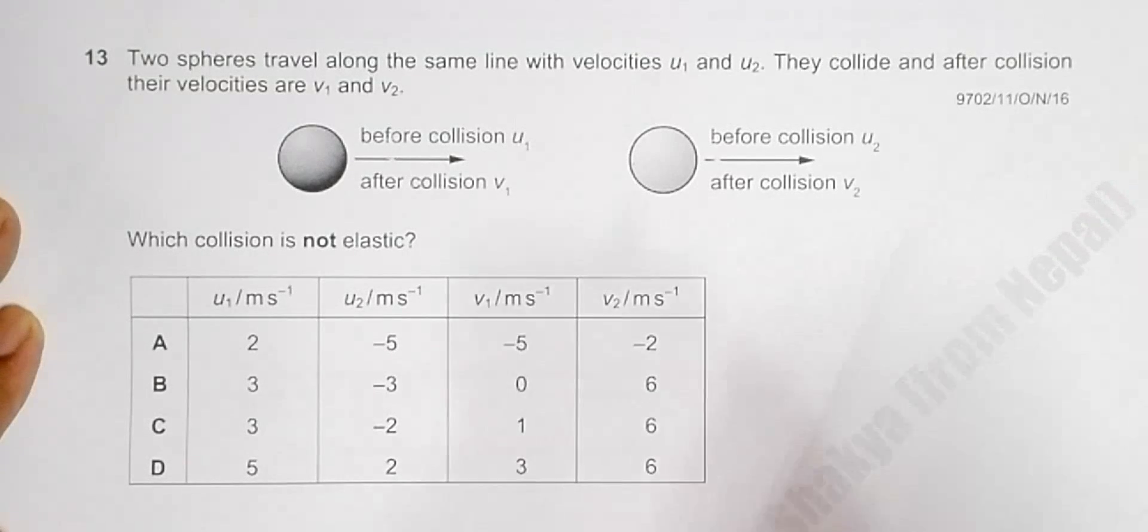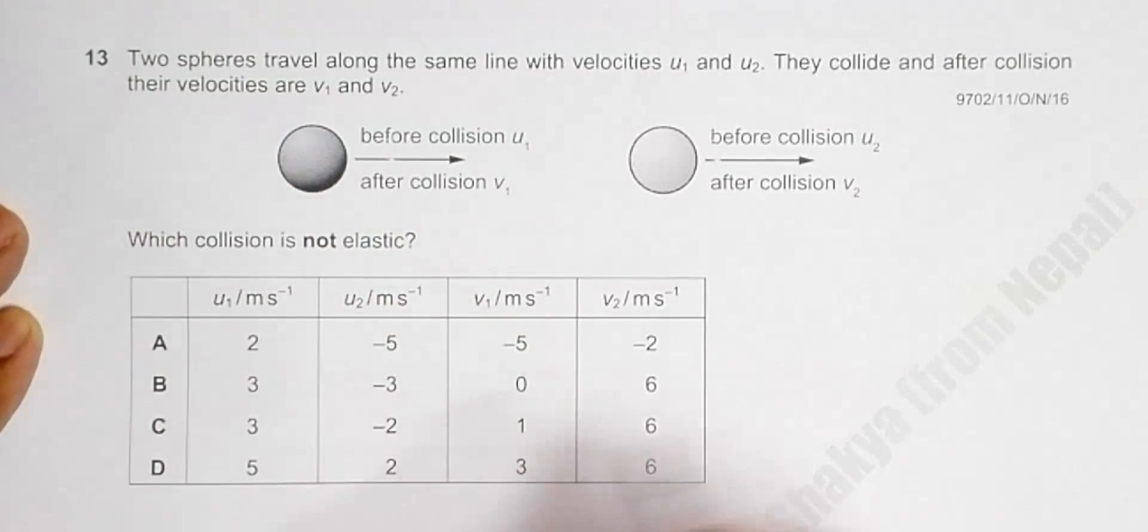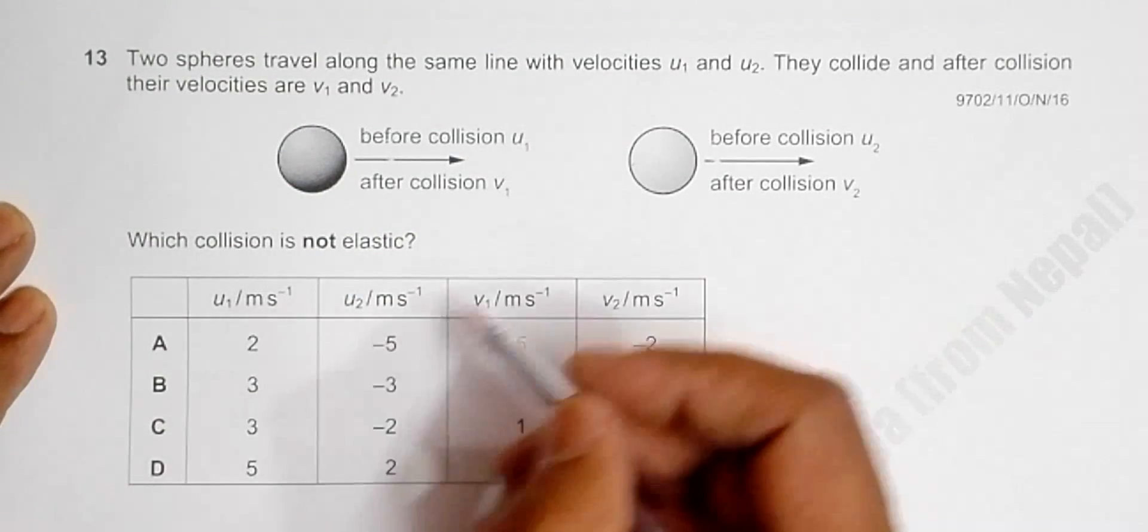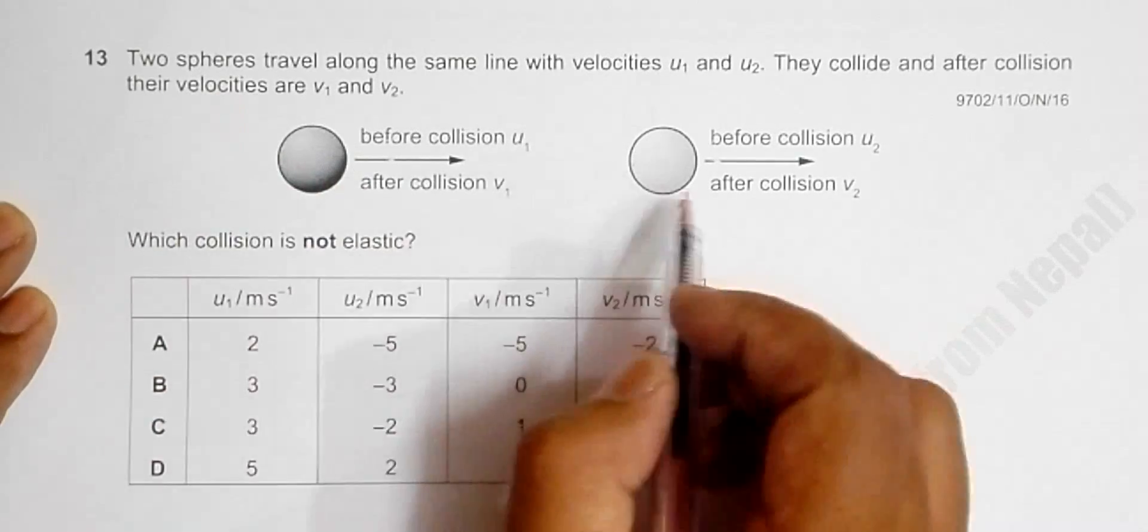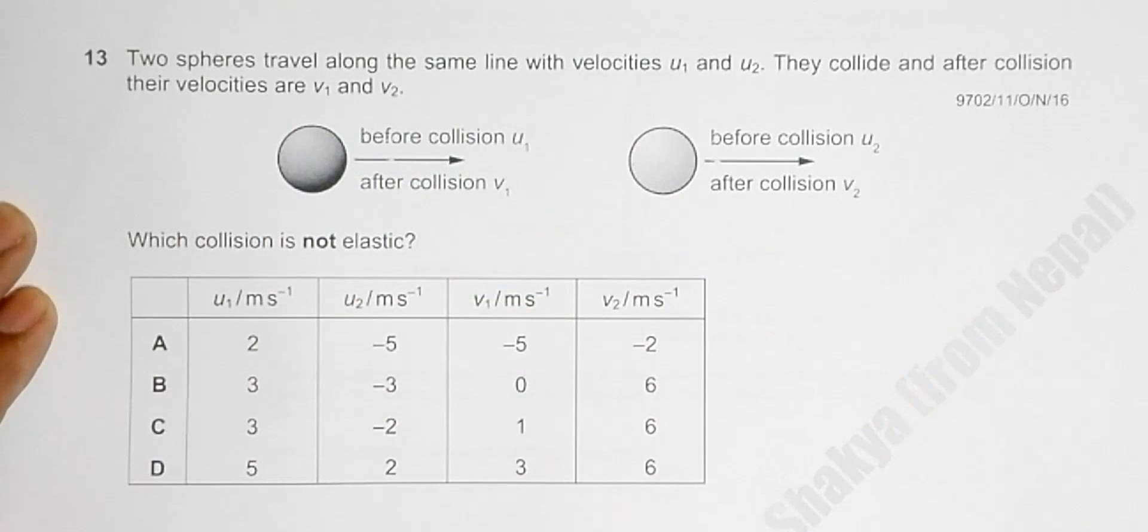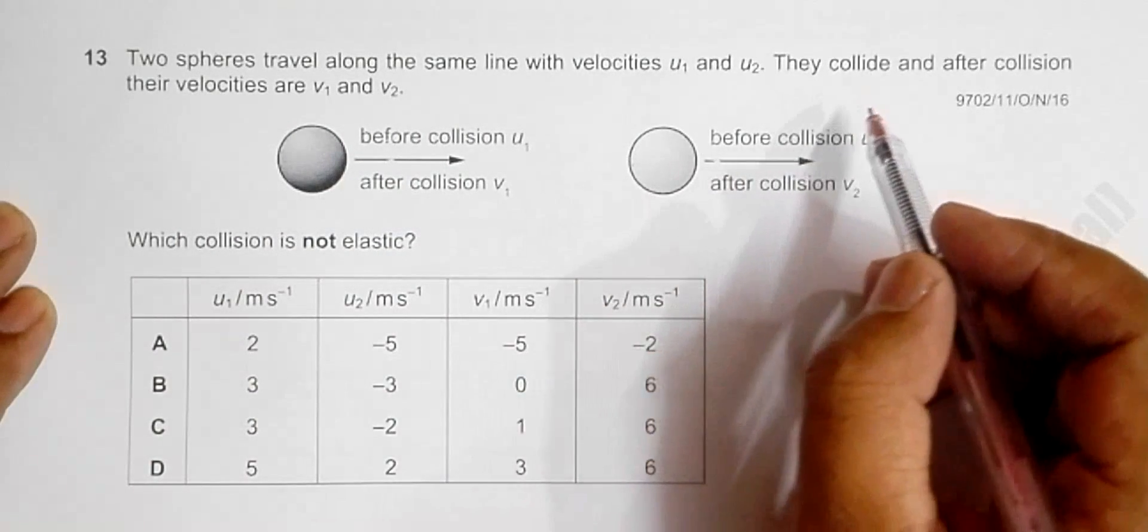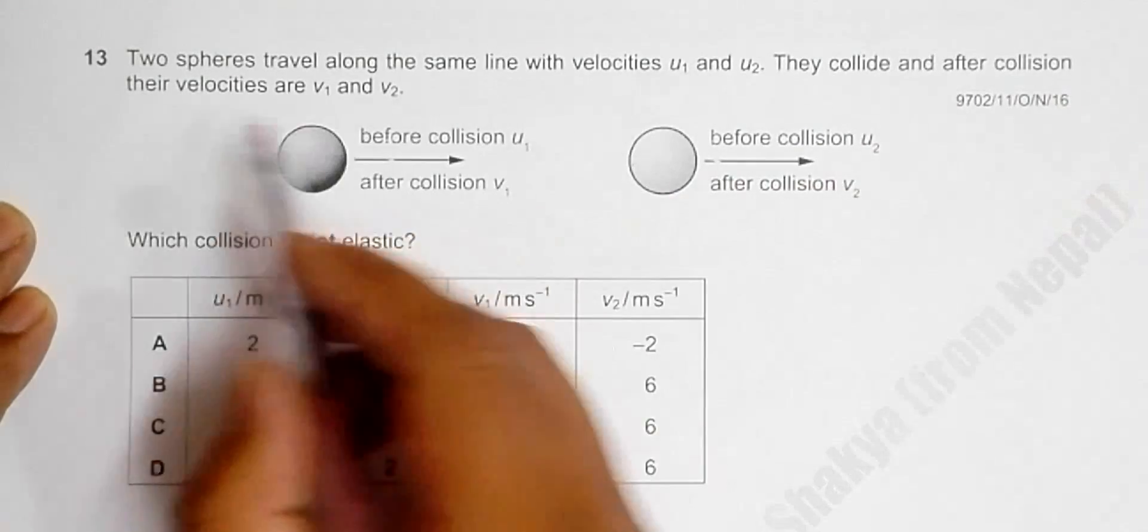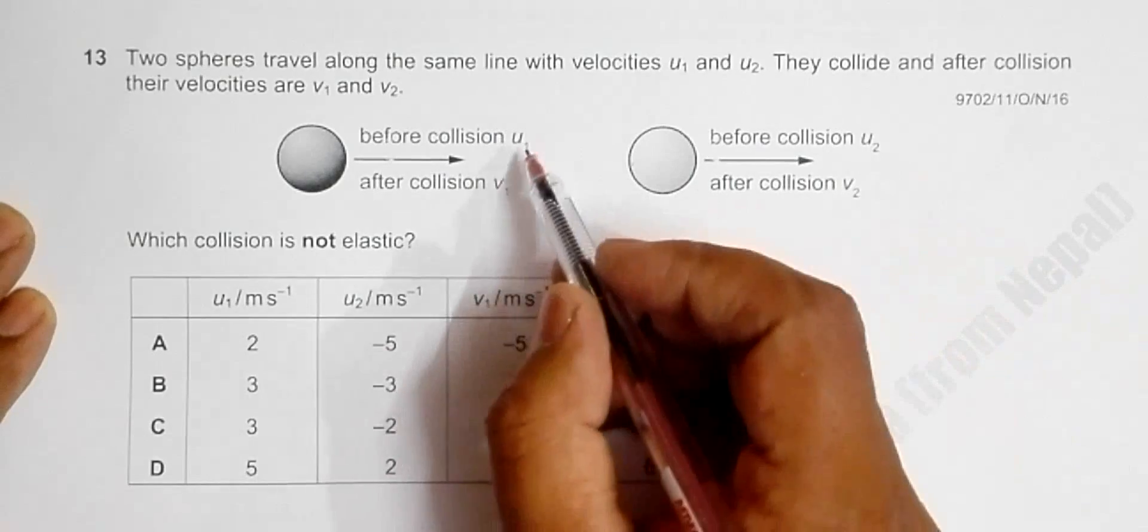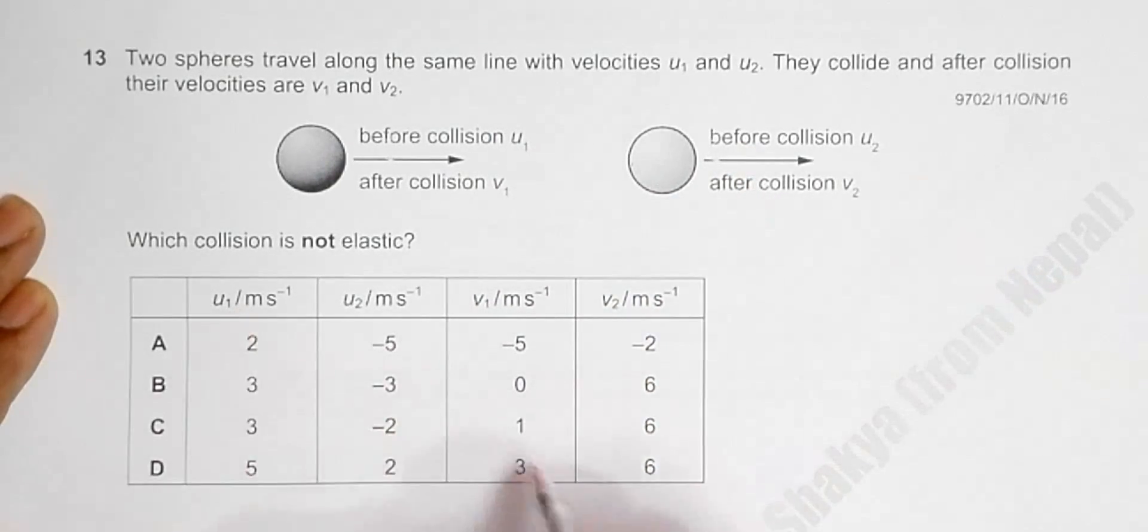This is question 13 from the 2016 October-November Paper 1. The question is about whether some collision is elastic or not. It says two spheres travel along the same line with velocities u₁ and u₂. They collide, and after collision their velocities become v₁ and v₂ respectively. So u₁ turns to v₁ and u₂ turns to v₂.